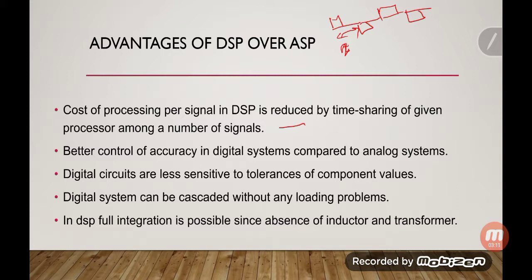Better control of accuracy in digital systems compared to analog systems. By changing the number of bits used to digitize the analog signal into a digital signal, we can control the accuracy. If we increase the number of bits, the accuracy will be high, although the cost will also increase.